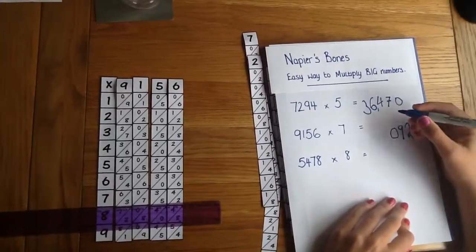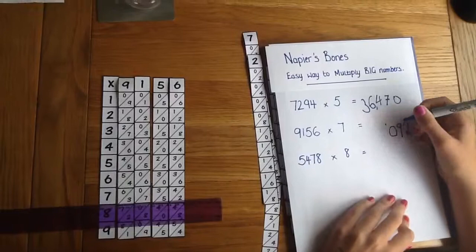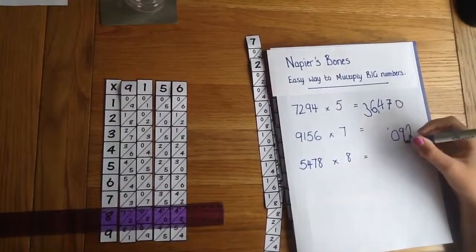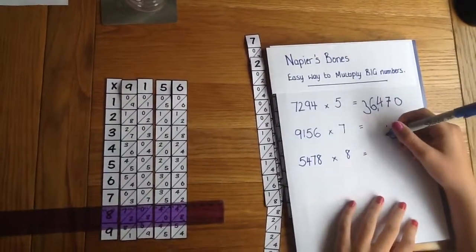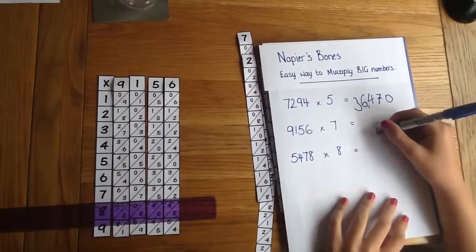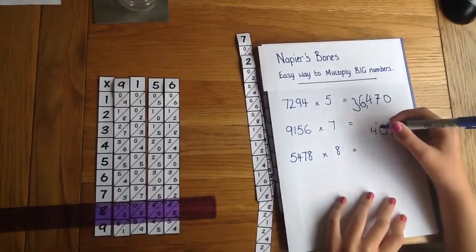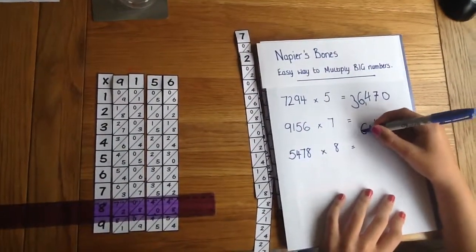3 and 7 make 10. So we're going to put a 0 and then we're going to carry the 1 to the next sum. So 0 and 3 make 3 plus 1 is 4. Okay and then 6 is left on its own.